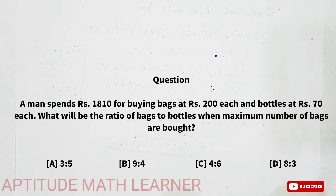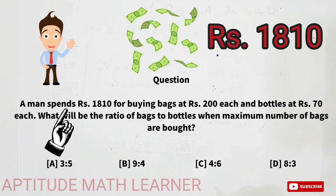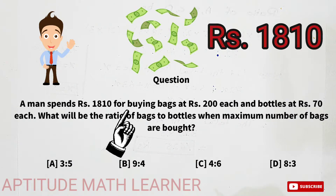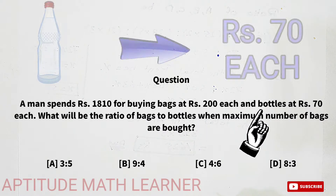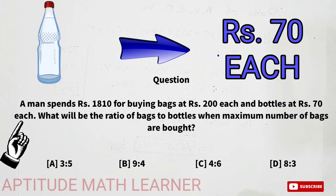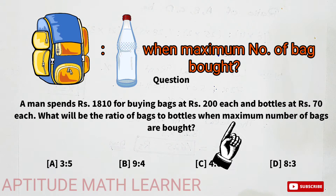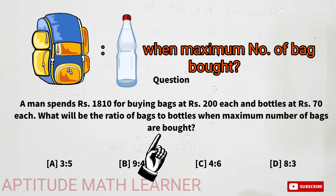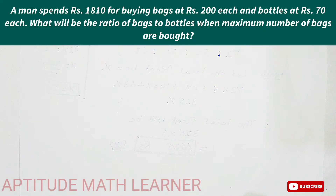Hello and hi to my YouTube channel Aptitude Math Level. Today I have a very interesting question: a man spent 1810 rupees buying bags at 200 rupees each and bottles at 70 rupees each. We have to find the ratio of bags to bottles when the maximum number of bags are bought.